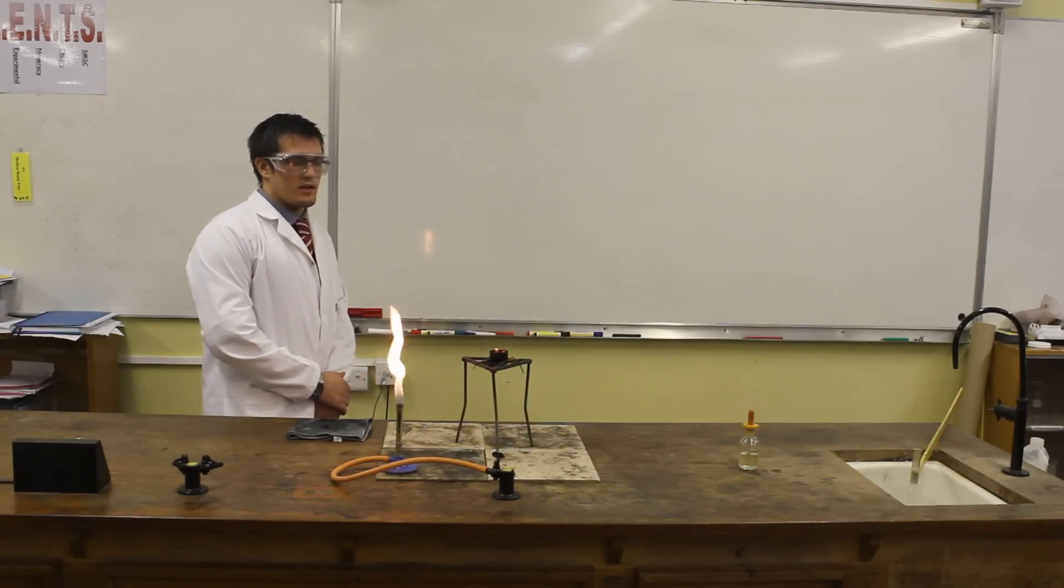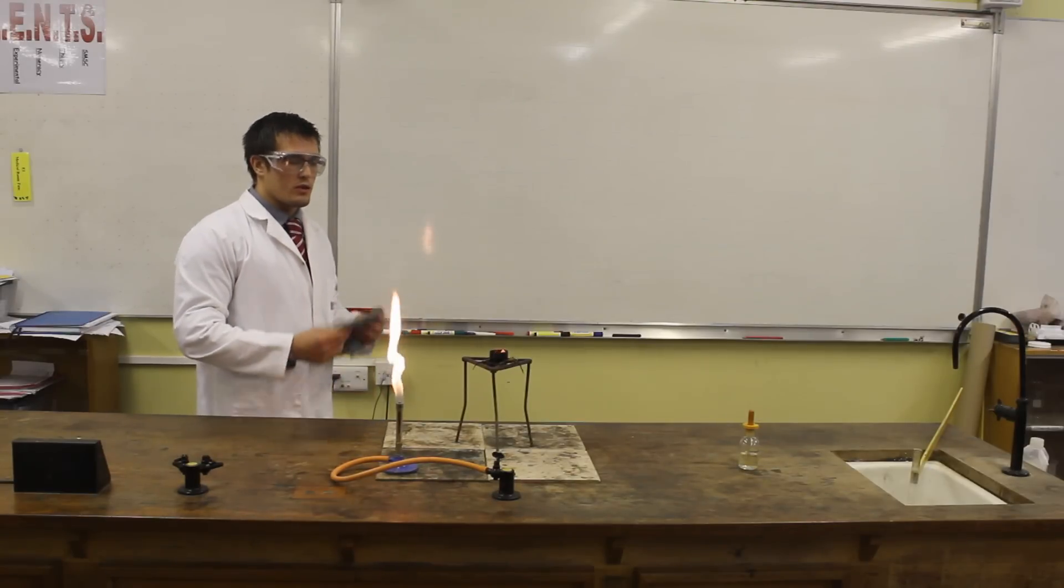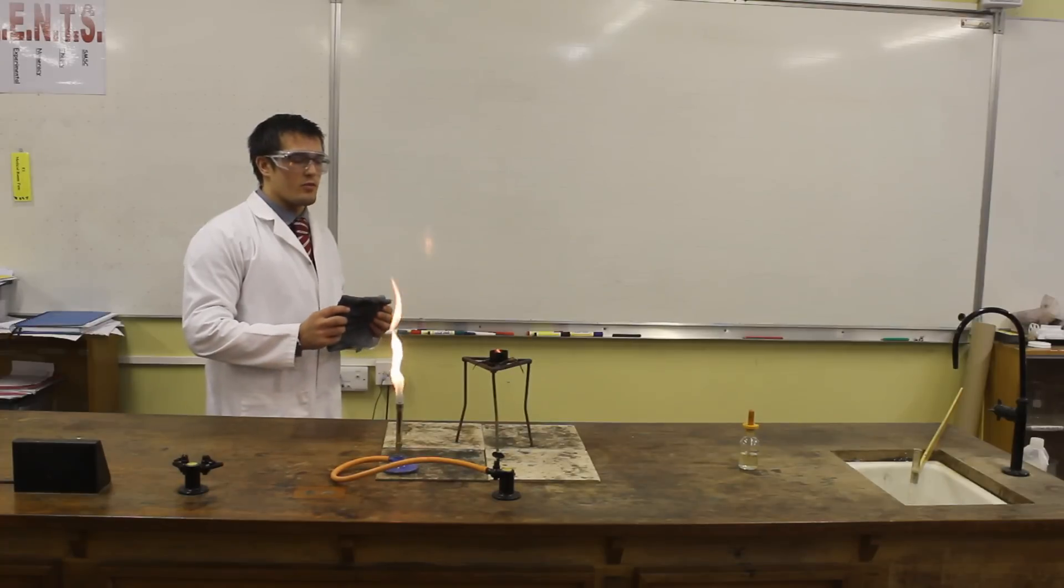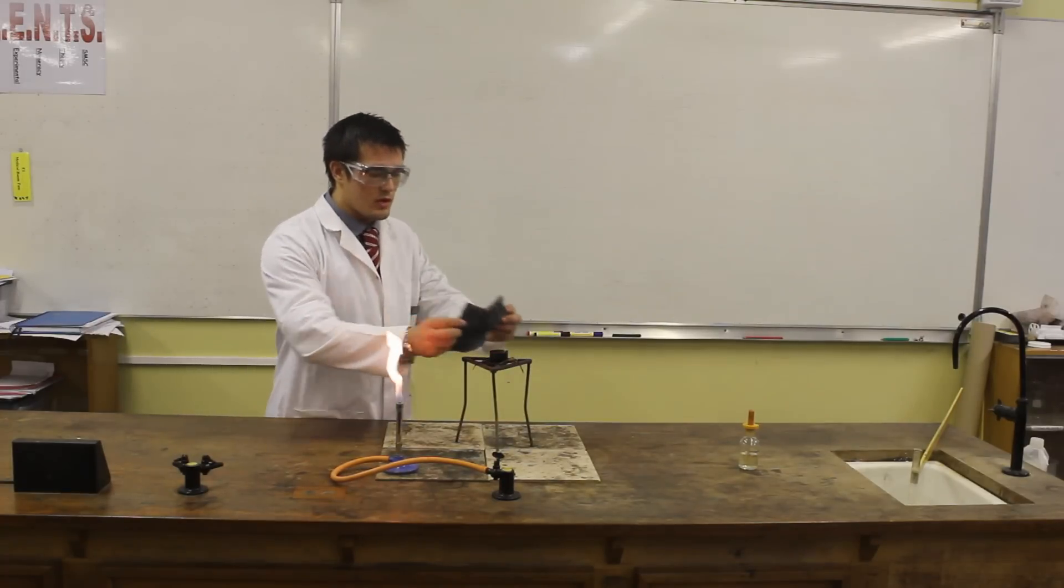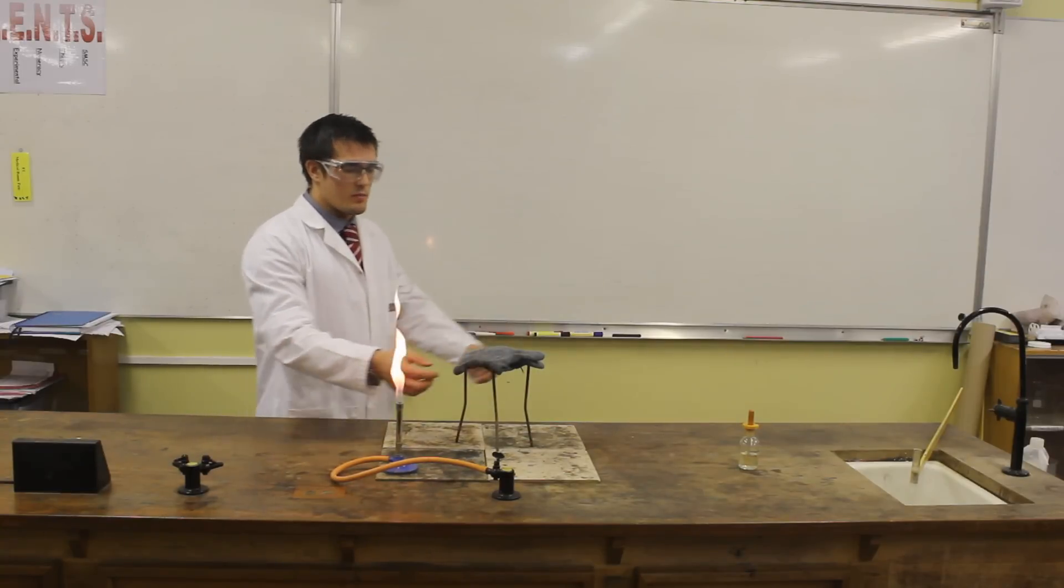The oil has now reached its flash point. In order to demonstrate how to put it out safely, if I was to put water on it, it will instantly vaporize the water and be really dangerous. So to put it out, we extinguish it with a damp cloth. That is the safe way to put it out in a chip pan fire.